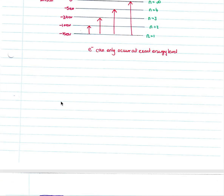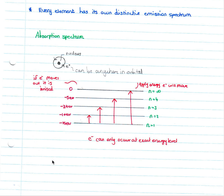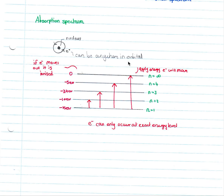The absorption spectrum does not form part of the syllabus but is interesting to know. An atom has a nucleus and electrons in orbitals; if an electron moves out, it is ionized. Electrons can only exist at exact energy levels — if given exactly the right amount of energy, say 5 electron volts, an electron will jump to the next energy level. If given enough energy to move beyond all energy levels, the electron is ionized.